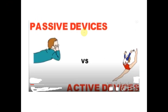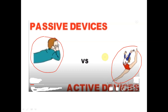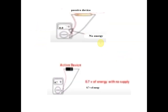This is an example of passive versus active devices. The inactive student represents passive devices, while active girls represent active devices. Similarly, passive devices do not produce energy while active devices do. For example, when resistors are connected to a multimeter, they show 0.0, meaning no energy. When a diode is connected to a multimeter, it produces 0.7 volts — this is an active device. Active devices produce energy; passive devices do not.